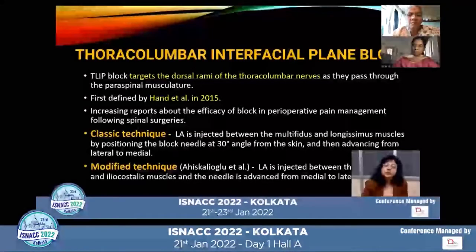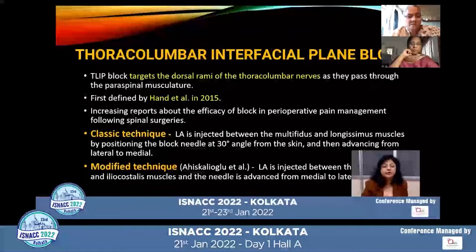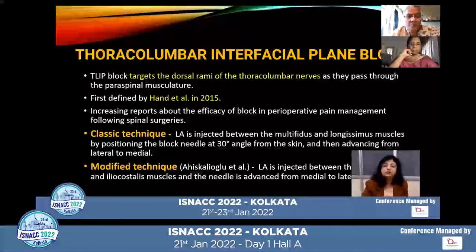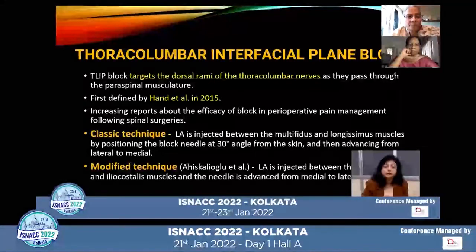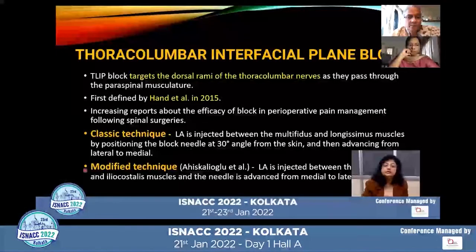The thoracolumbar interfacial plane block targets the dorsal rami of thoracolumbar nerves as they pass through the paraspinal musculature. The TLIP block was first defined by Hand et al. in 2015. However, after that, there are increasing reports about the efficacy of the block in perioperative pain management.